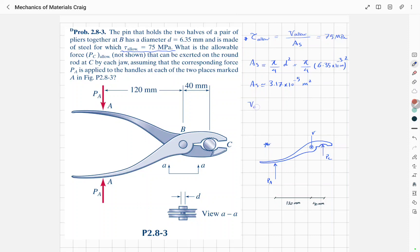So using this equation, we can write V allowable is approximately equal to 2375.19 newtons.